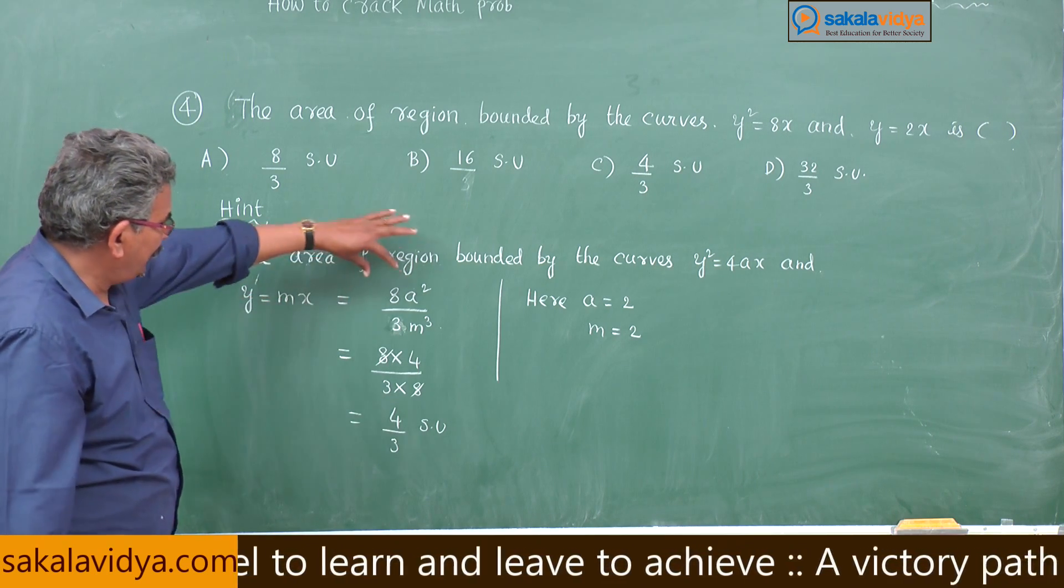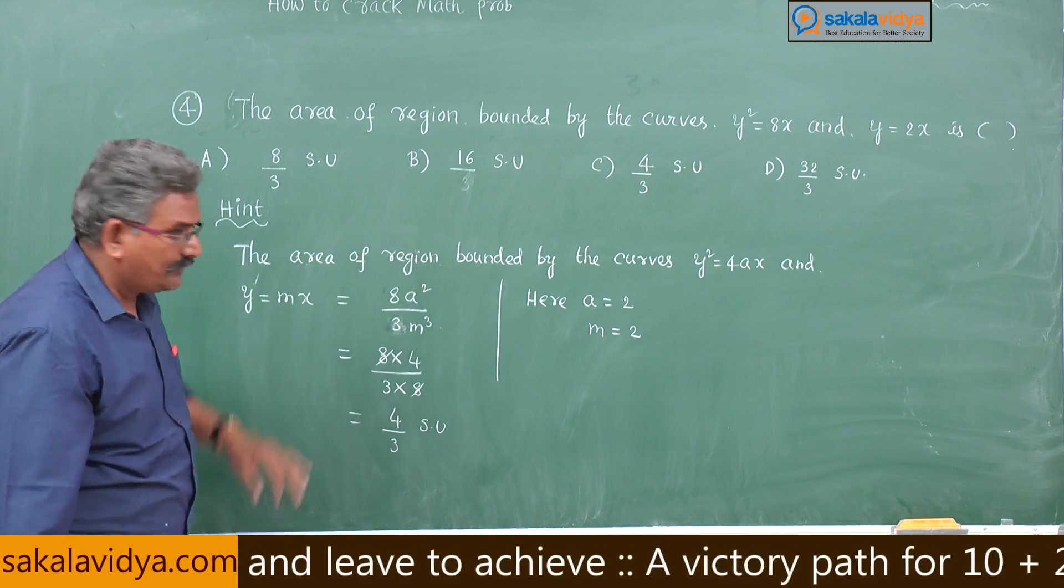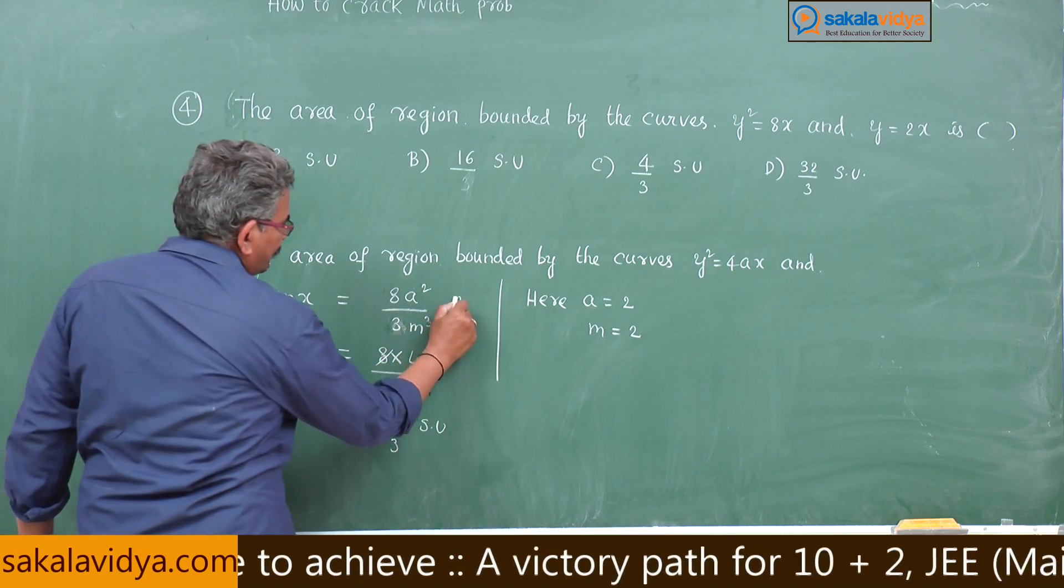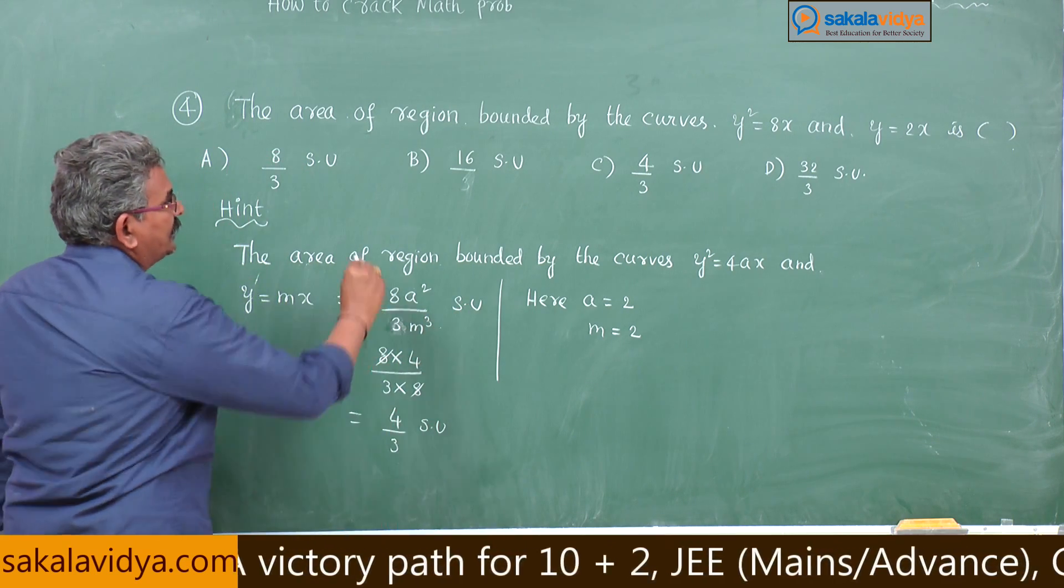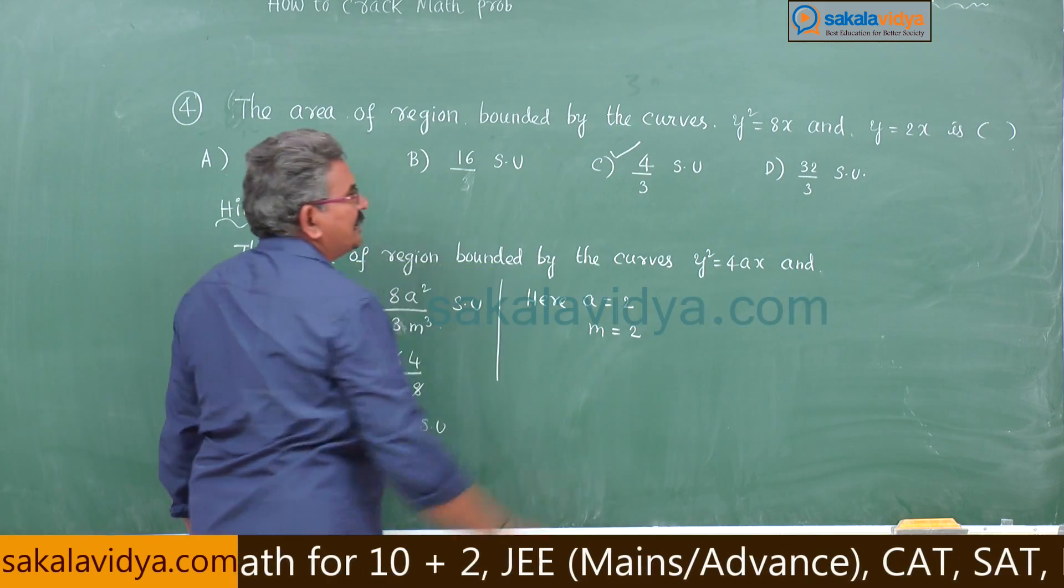Just you have to remember the formula 8a square by 3m cube square units, that is all. What will be the answer? Obviously, c is the right answer.